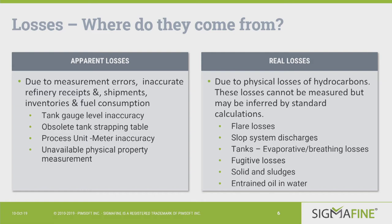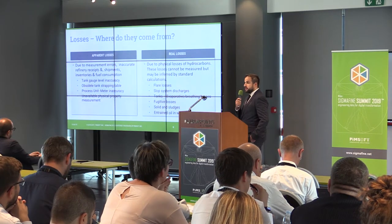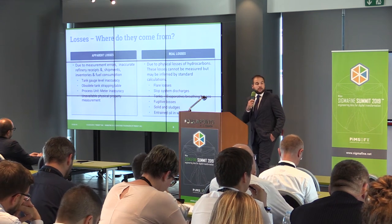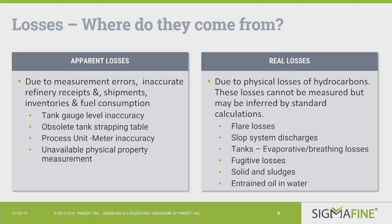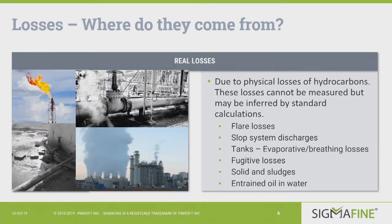First we need to understand which types of losses exist in an industrial plant. Apparent losses include all measurement errors — wrong transfer declarations, errors in tank gauge level, or in flow meter indicators — and SigmaFine's reconciliation can solve this. But we also have real losses: real hydrocarbon emissions from unattended events that impact your balance, such as flare, evaporative emissions, fugitive emissions, etc.